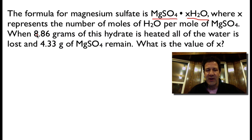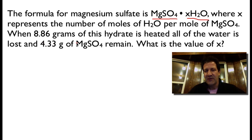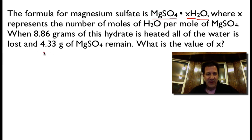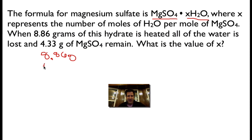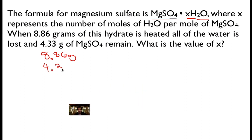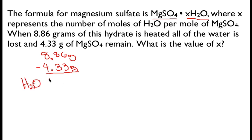We have 8.86 grams of the hydrated compound and 4.33 grams of the dehydrated compound. We also need to figure out the grams of water, and the way we do that is pretty straightforward. We subtract the dehydrated mass from the hydrated mass: 8.86 grams minus 4.33 grams, and that gives us the mass of the water, which is 4.53 grams.